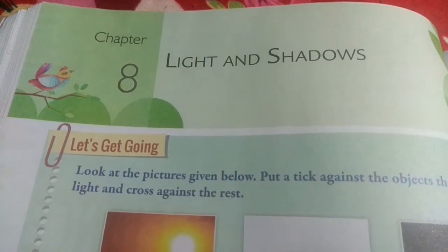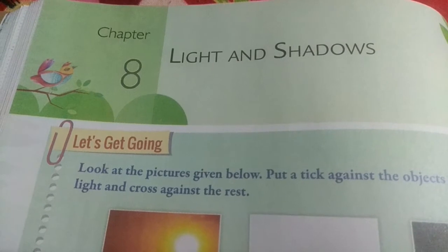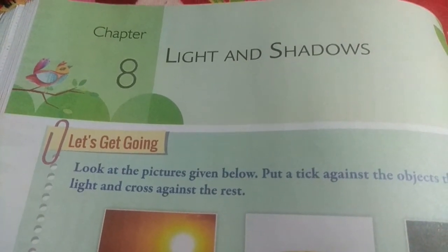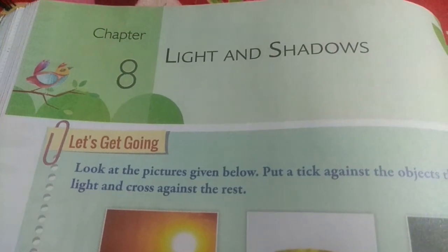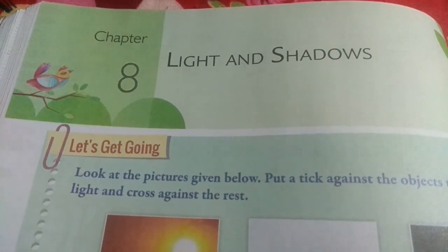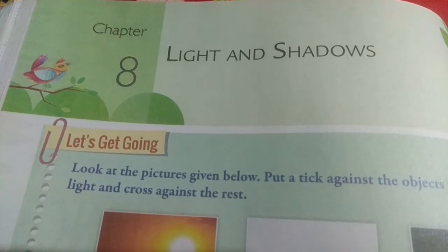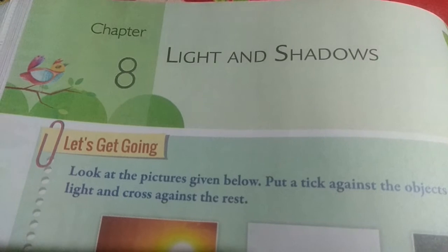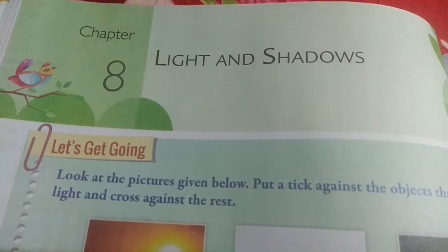Different objects allow different amounts of light to pass through them, while some objects do not allow light to pass through them at all. Based on these properties, objects are classified as transparent objects, translucent objects, and opaque objects. Now let us see these different types of objects.